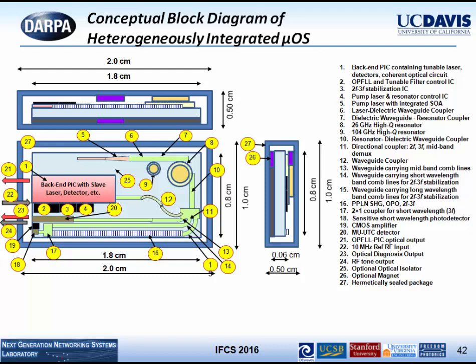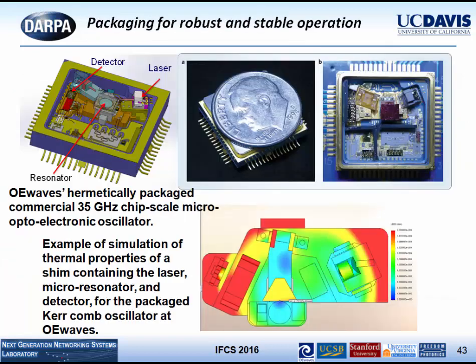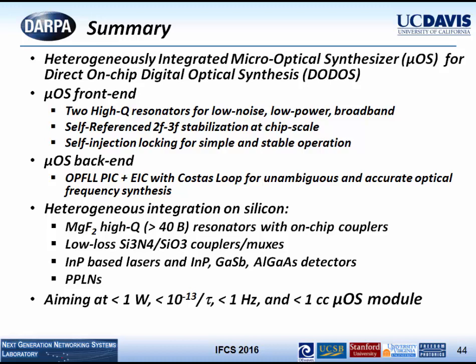By the time we go to phase two and phase three, we will integrate everything in a compact module targeting one cubic centimeter. OE Wave has a proven record of generating this type of package with thermal engineering and temperature control — all within a thermal budget of one watt. To summarize: we're working on a heterogeneous integrated micro-optic synthesizer for DODOS. The front-end consists of two high-Q resonators for low-noise, low-power operation with 2F-3F stabilization at chip scale and self-injection locking for stable narrow-linewidth operation.